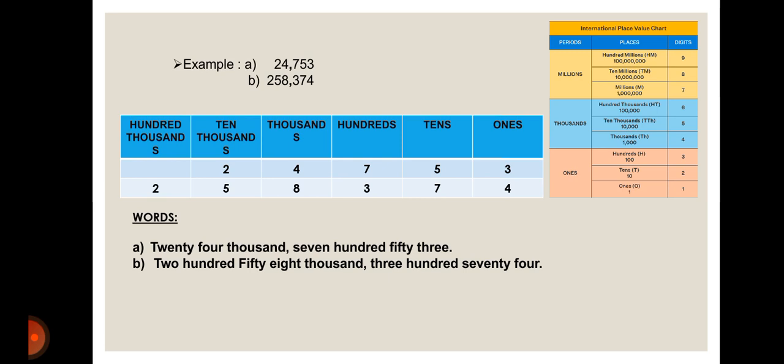When writing numbers in words, we follow the left-to-right rule — we start with the leftmost digit. In the first case, 24 belongs to the thousands group, so we write twenty-four thousand, then seven hundred fifty-three. For 258,374, the digits 2, 5, and 8 belong to the thousands family, so we write two hundred fifty-eight thousand, three hundred seventy-four.